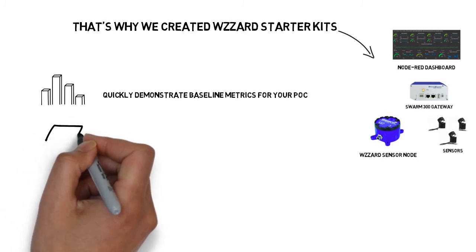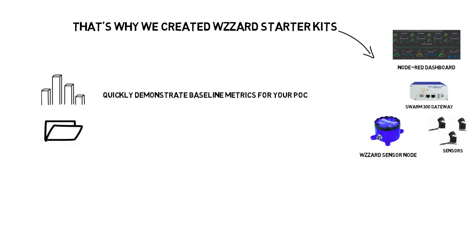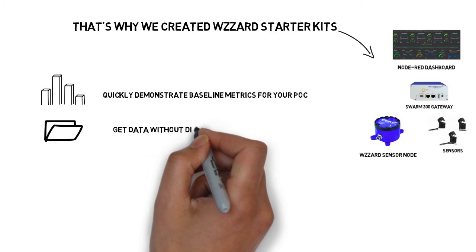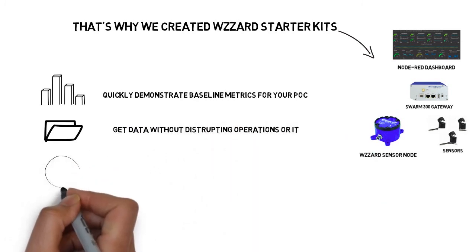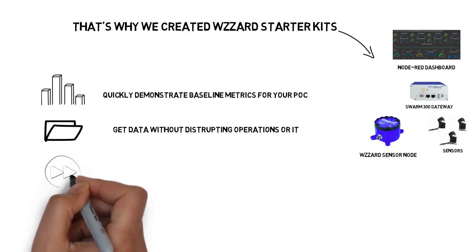With Wizard Starter Kits, you can quickly demonstrate baseline metrics for your proof-of-concept. You can get data without disrupting existing equipment or processes. And you can deploy quickly, often in hours, not days, not weeks, or even months.